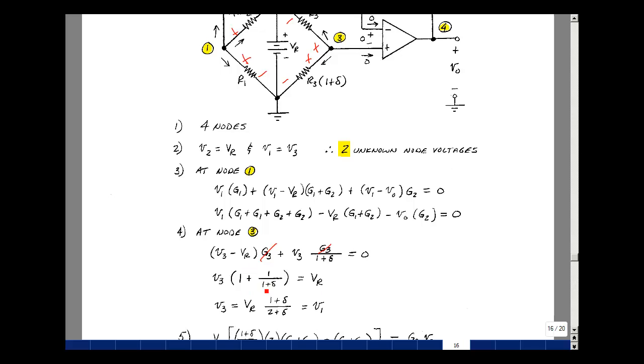So I have a common denominator here. It'd be 1 plus delta. So I'd have 1 plus delta plus 1, so that'd be 2 plus delta. Let's put that on the other side of the equation. So I'll make the numerator of the denominator and the denominator of the numerator. The value now of V3 in terms of the reference voltage and the change in resistance. But that's also equal to V1. I'll go back and substitute this into here.